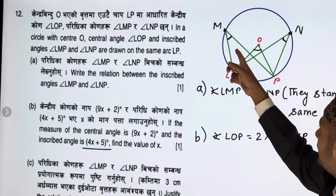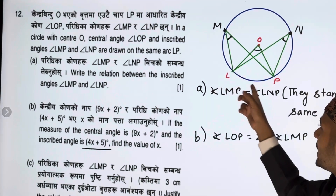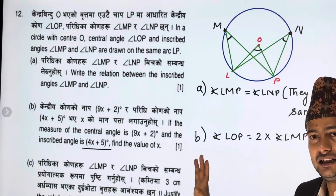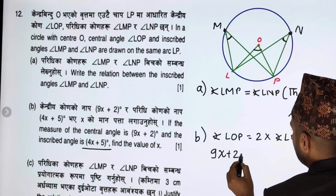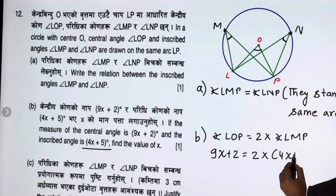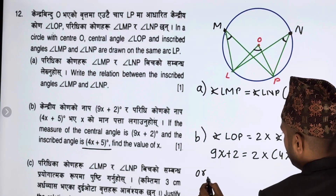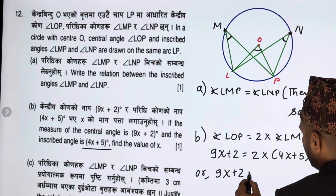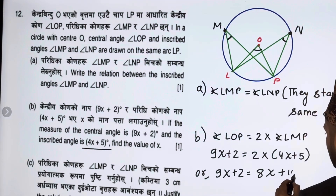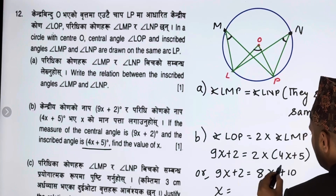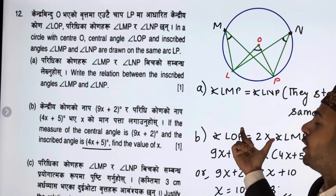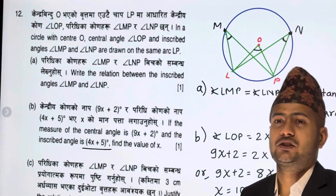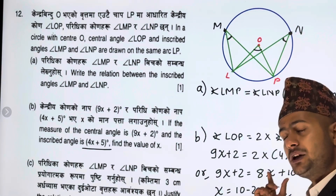The central angle is double the inscribed angle. LOP has the value 9x plus 2 degrees. Setting up: 9x plus 2 equals 2 times (4x plus 5). Solving gives the value of x. This is the answer.